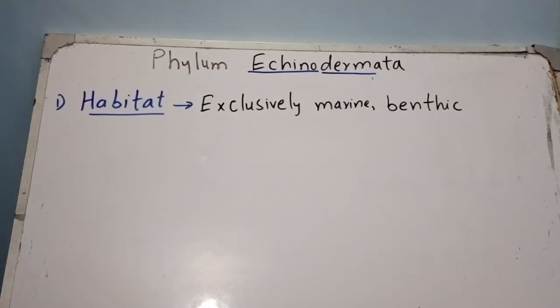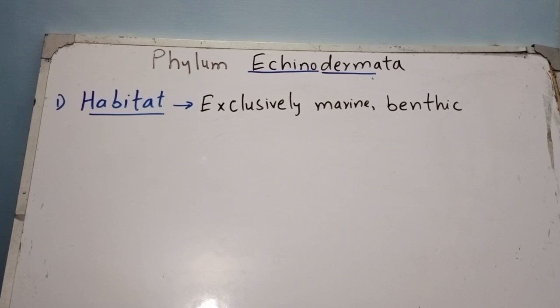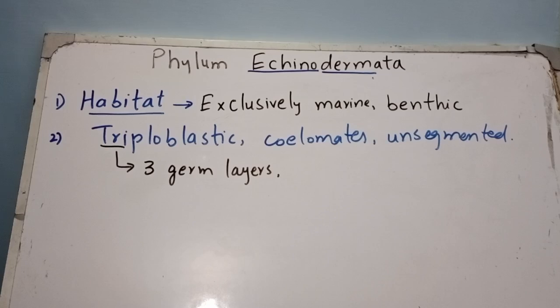The first diagnostic feature is habitat. All echinoderms are exclusively marine, meaning all members are found in sea water or in the ocean. None of the members are found in freshwater or on land. Some are free living; some are attached to a substratum. They are benthic, meaning they are bottom dwellers found on the sea floor or ocean bed.